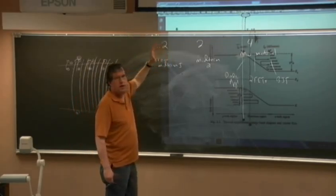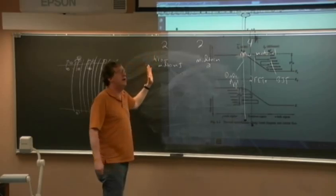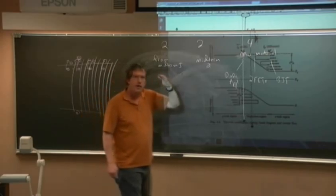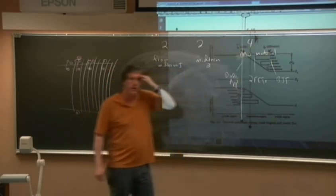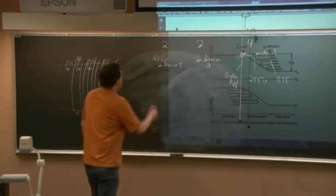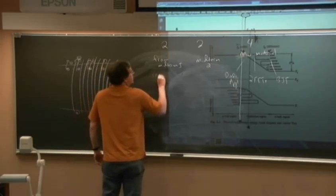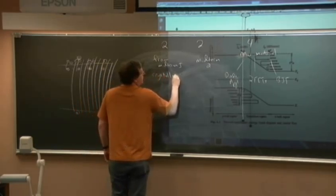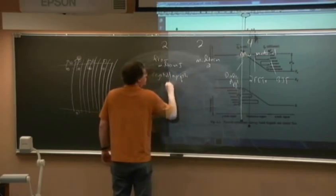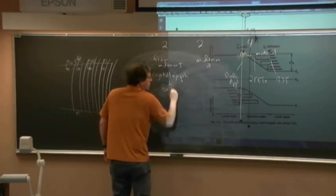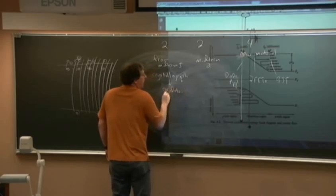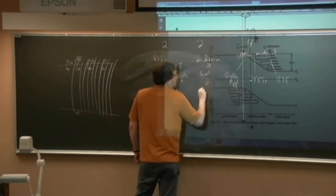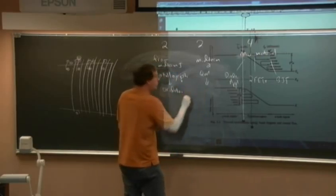Midterm one covered crystallography up to oxidation, and midterm two covered quantum mechanics up into unbiased diodes. I realize I need to also cover biased diodes and switching diodes — I spent a lot of time on switching diode on-off transients — so I'll need to reshuffle the coverage slightly, because that's a key aspect.